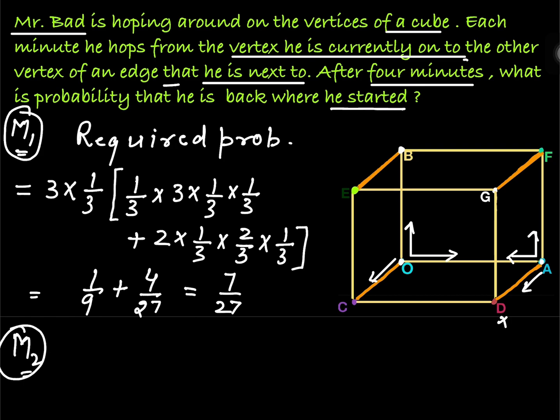If I ask you where he should reach after three steps so that in fourth step he will not be able to come back at O, what should be your answer? You will say after three steps, if he is at G, at fourth step he can't come back at O. So if he is at F, if he is at E, if he is at D, after three steps, if he is at any of these four positions, in fourth step he cannot come back.